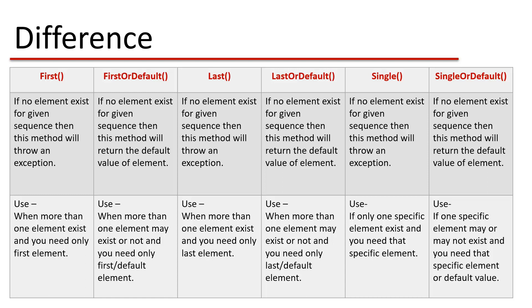Now the question is: where should we use these methods? You can choose the First method when more than one element exists and you need only the first element, and you are sure that a value will always be returned. If you are working with a scenario where data may or may not exist and you need the first value — or the default if no data exists — use FirstOrDefault. Use Last when you need only the last element and are sure data will always be available.